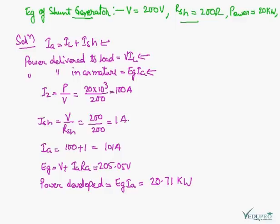So first we will find out IL. IL is P upon V. Power is 20 kilowatts, so 100 ampere. Now ISH is 1 ampere. IA we can calculate, it is given by this. So armature current will be 101 ampere. So EG is equal to V plus IA RA. Put the values here, we will find this. Power developed is EG into IA. So calculating this we can get 20.71 kilowatts.